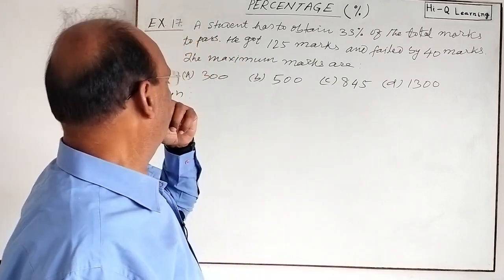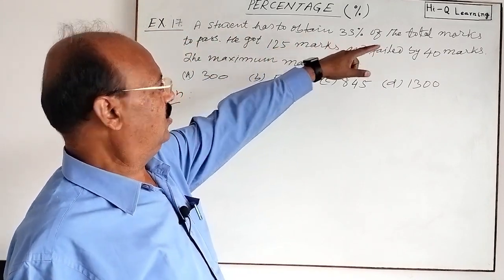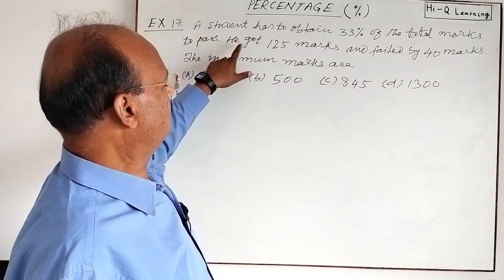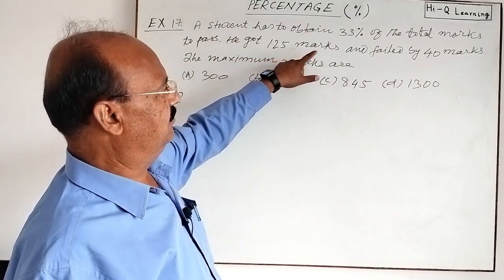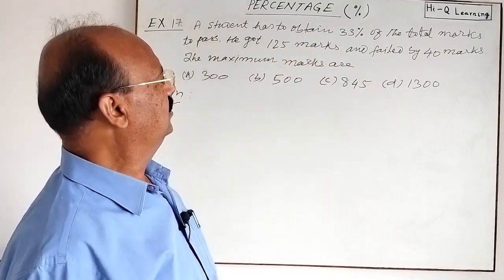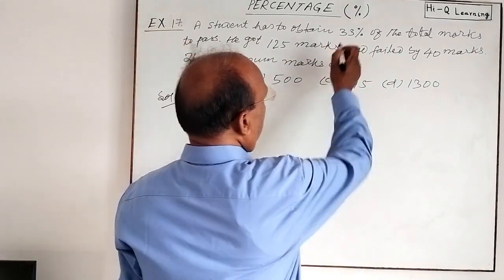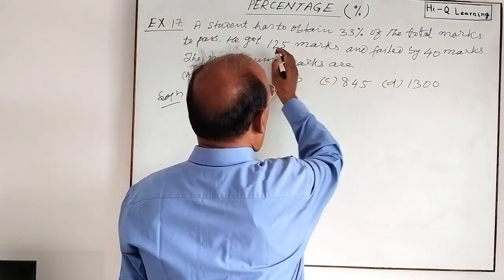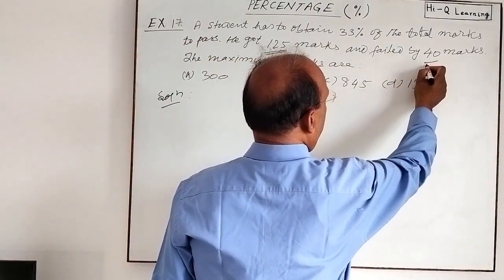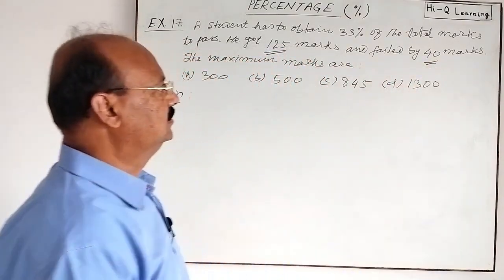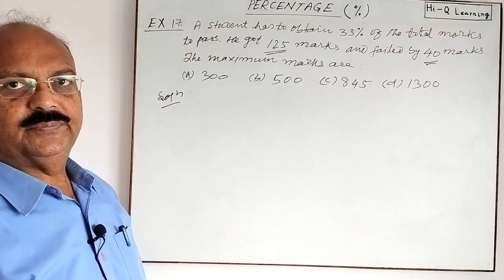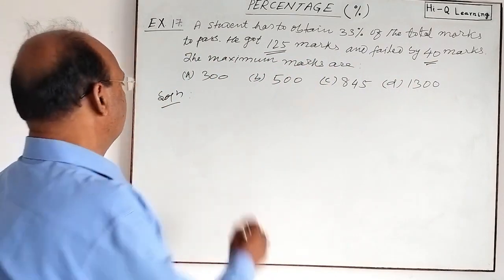So you see, a student has to obtain 33 percent of the total marks to pass and he got 125 marks and failed by 40 marks. He got 125 marks and failed by 40 marks. What does it mean?